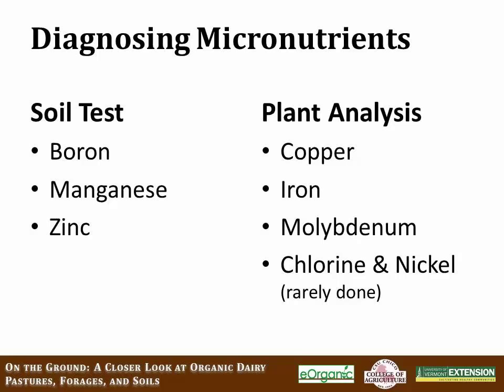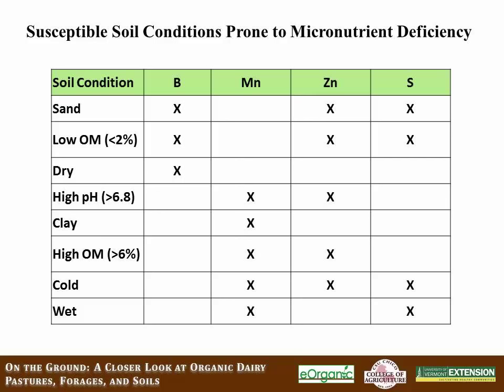There are many soil conditions that lead to micronutrient deficiencies. A micronutrient like boron has a negative charge and doesn't stick to soil organic matter or clay particles, making it very prone to leaching. Sandy soils or soils with very low organic matter often see boron deficiencies. Manganese deficiencies are often seen when pH is high, with very high clay contents, high organic matter, or when soils are very cold and wet.